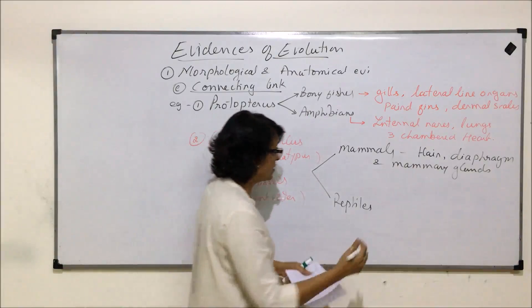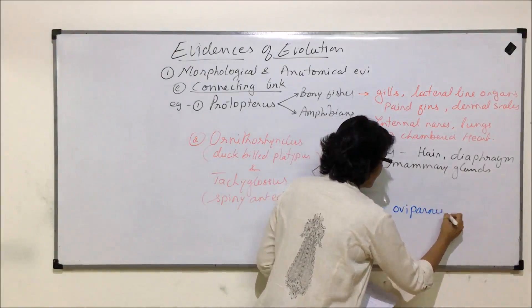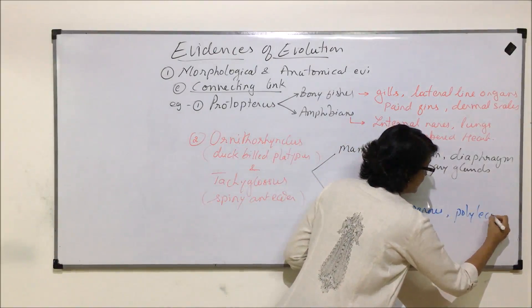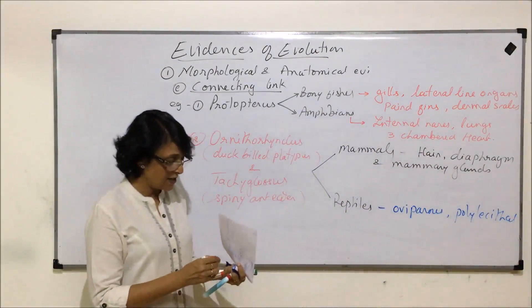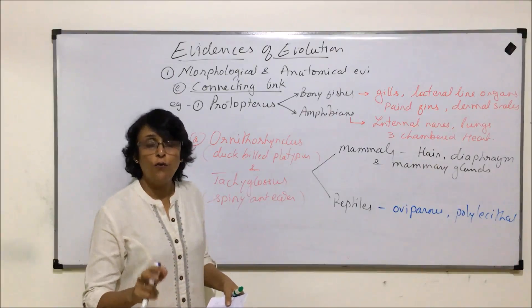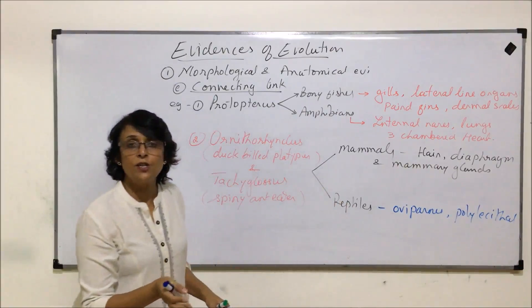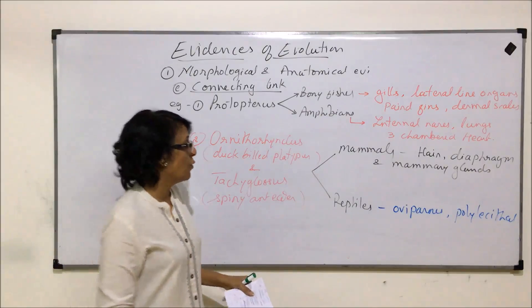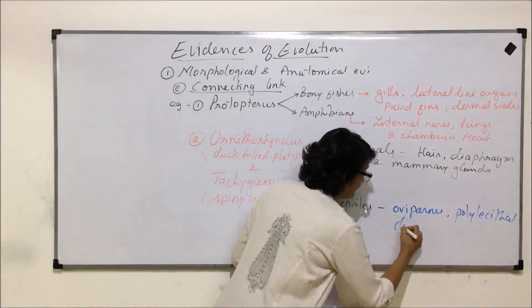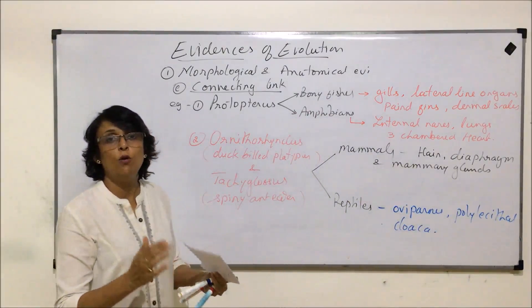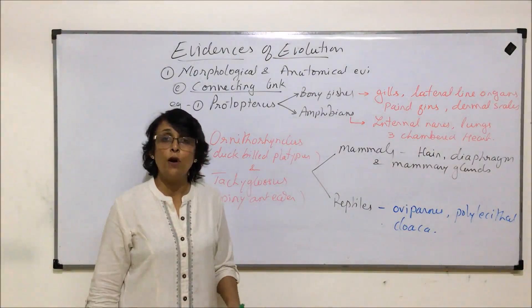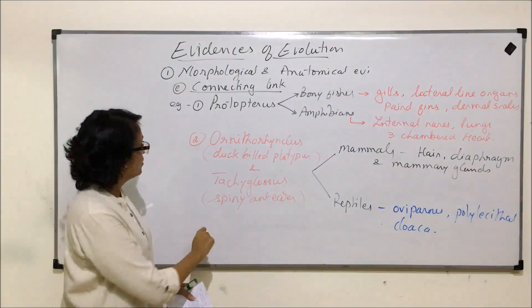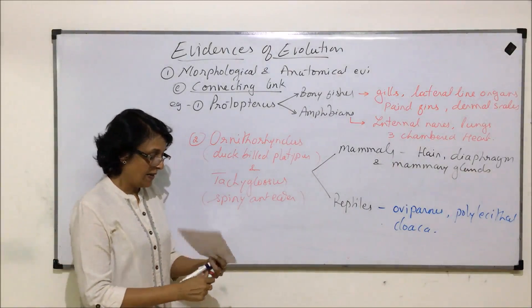Further reptilian characters include the cloaca, a common opening for three systems — the digestive system, excretory system, and reproductive system — which is a typical lower vertebrate character. These are very important examples of connecting links. Another example is Phenodon, which shares characteristic features of amphibians and reptiles. Balanoglossus shares characteristic features between chordates and non-chordates.